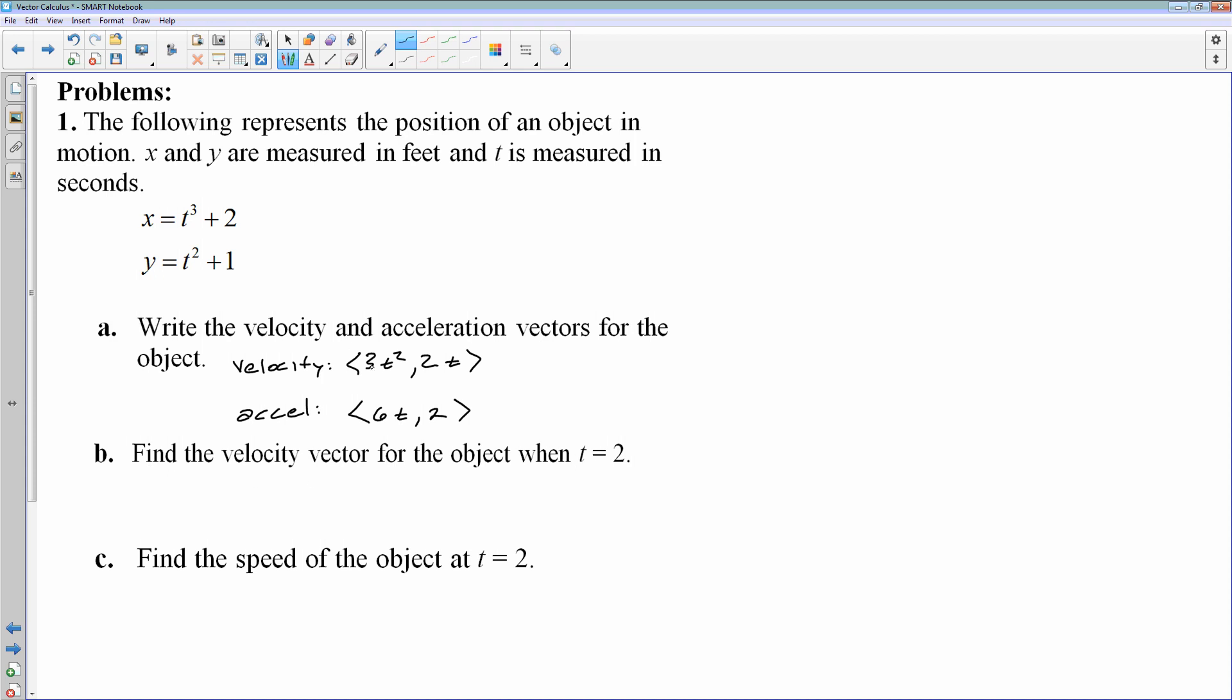If I ask for one at a specific time, then, as you would expect, you simply plug that value of t in for the velocity vector. So my velocity vector at t equals 2 is going to be ⟨3 times 2², 2 times 2⟩, which ends up being the vector ⟨12, 4⟩. So there's your velocity vector.